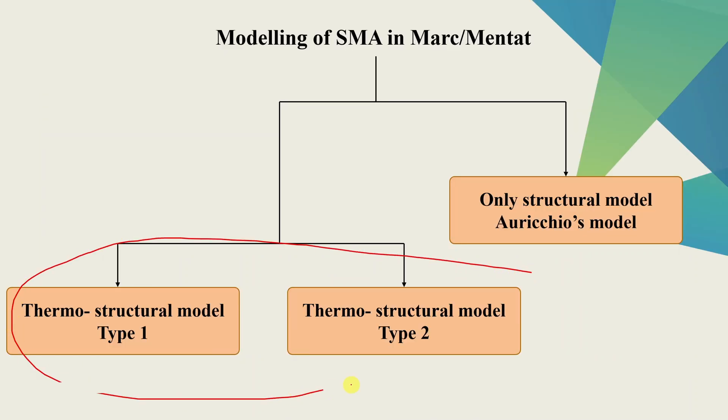These two models are for shape memory effect. Here temperature is important, that's why those are thermostructural models. There are two types, but they are very close to each other. And for super elasticity, MARC has this model which is only a structural model because we don't have to consider temperature change. Now for this tutorial, we are going to focus on only this type one thermostructural model.